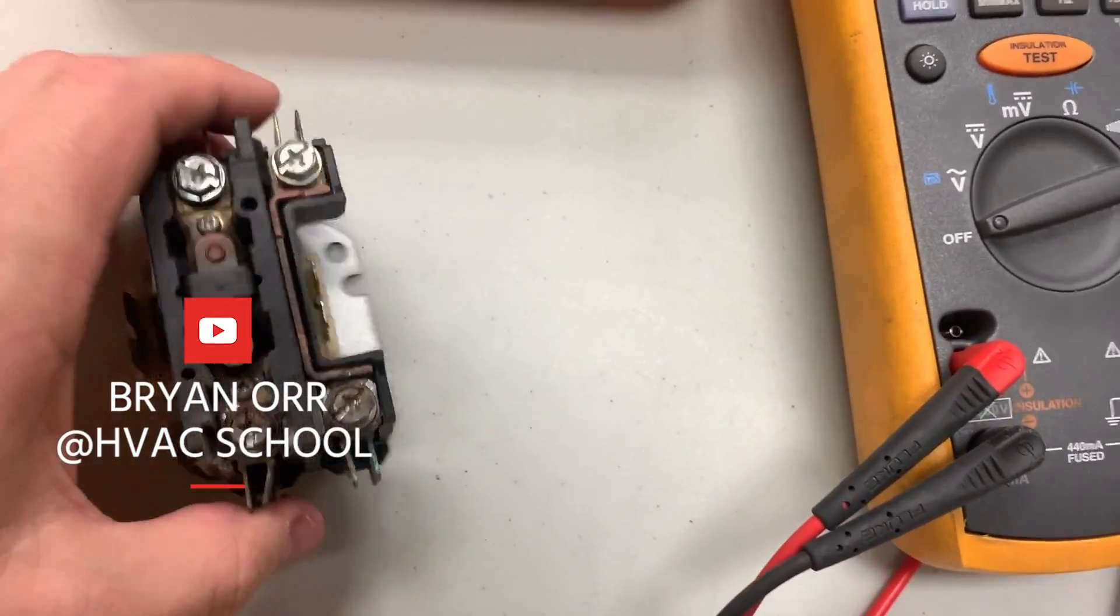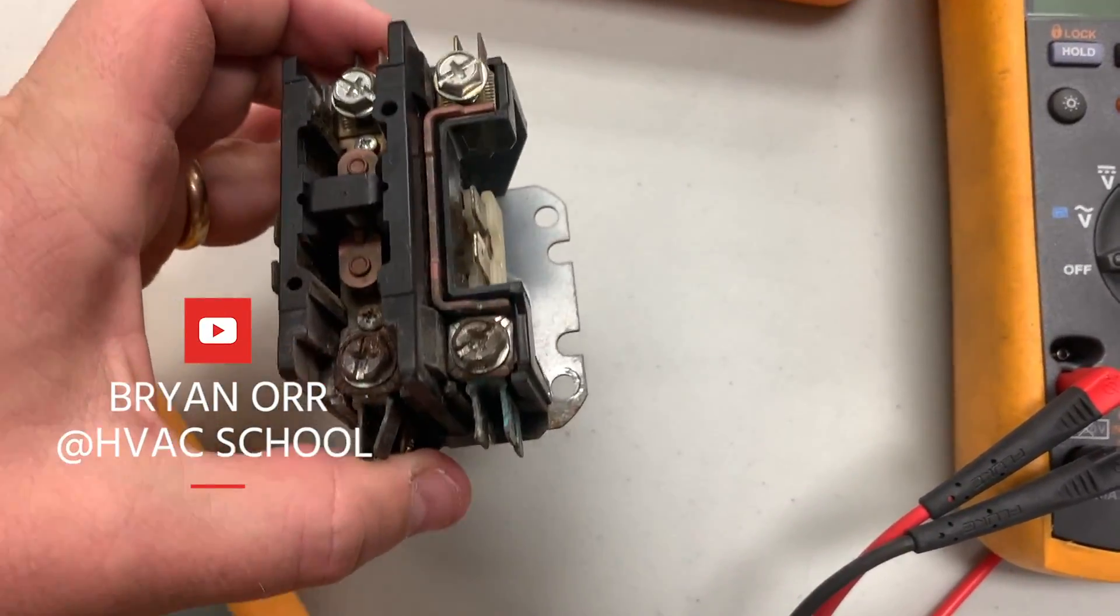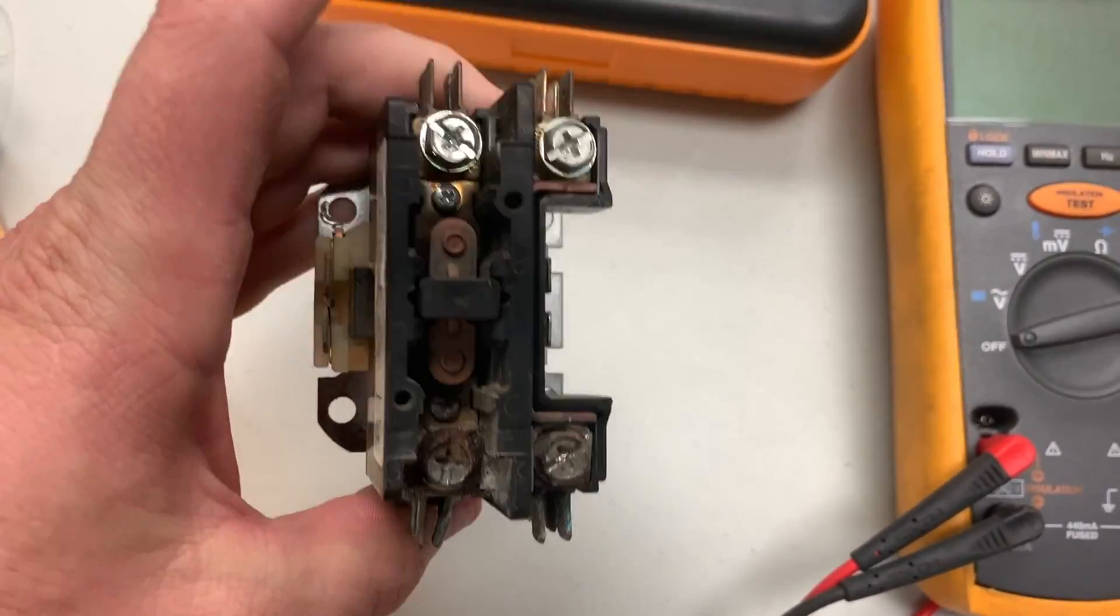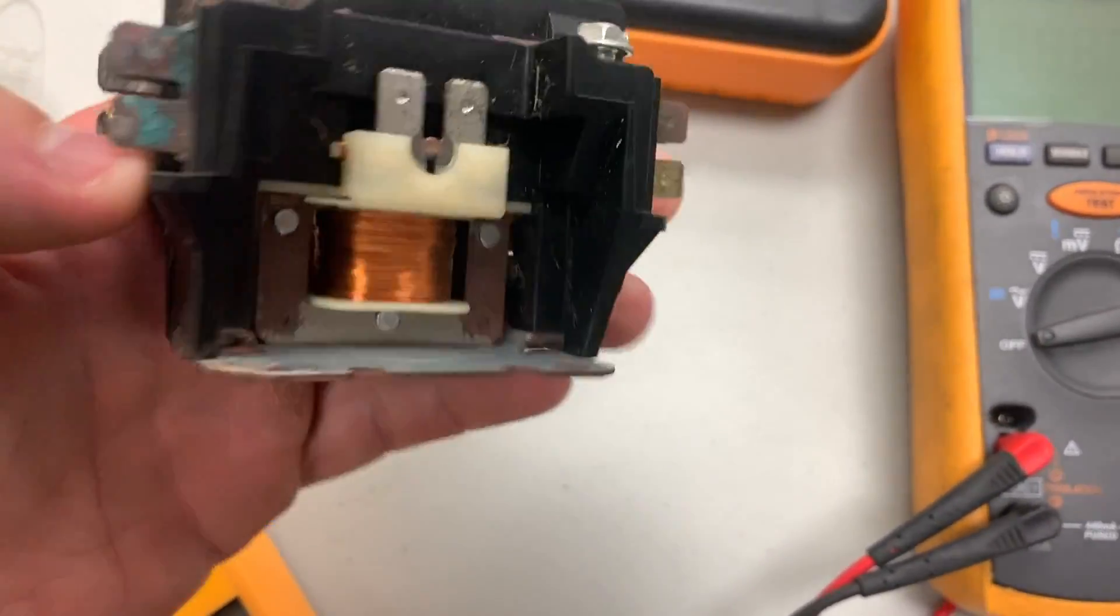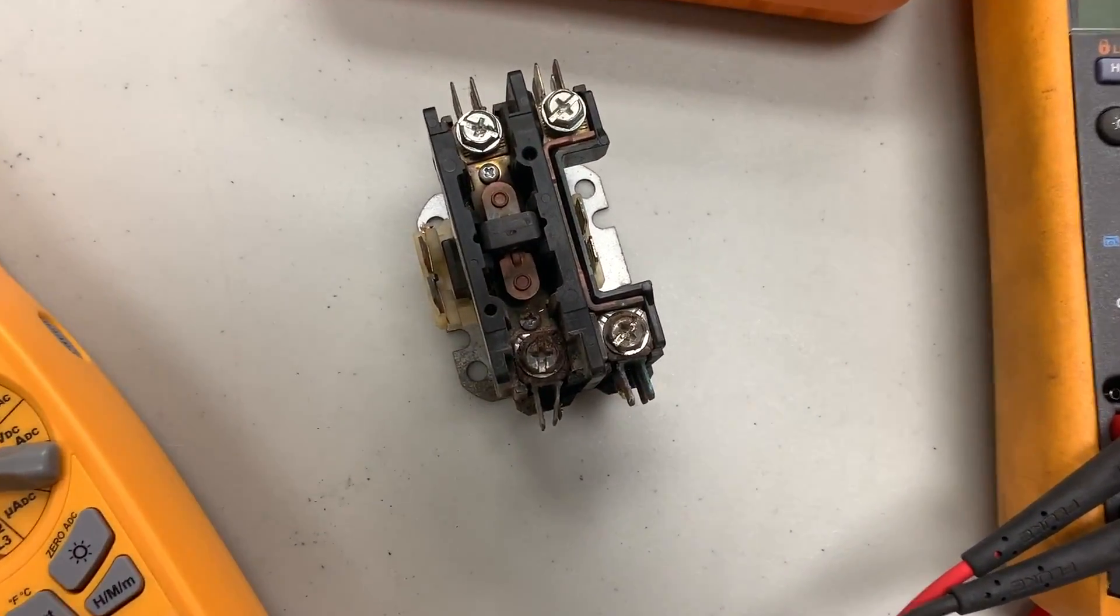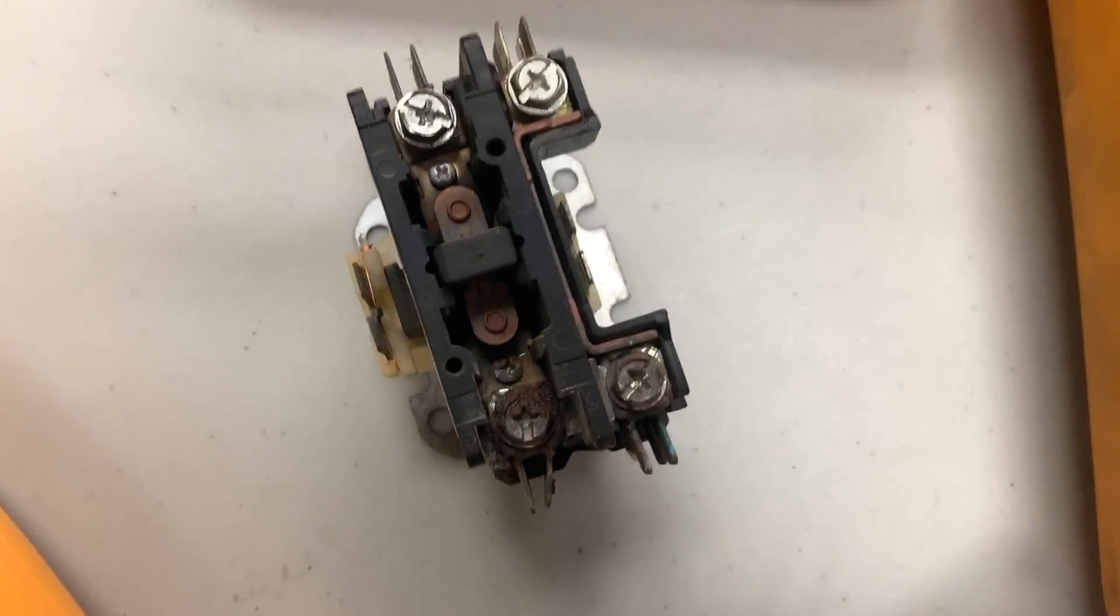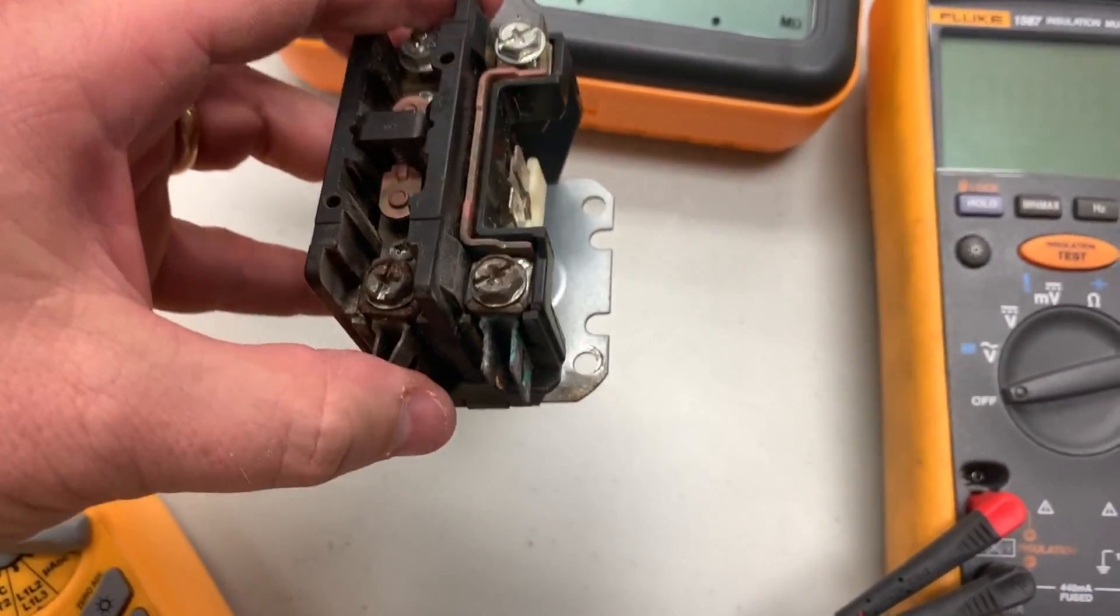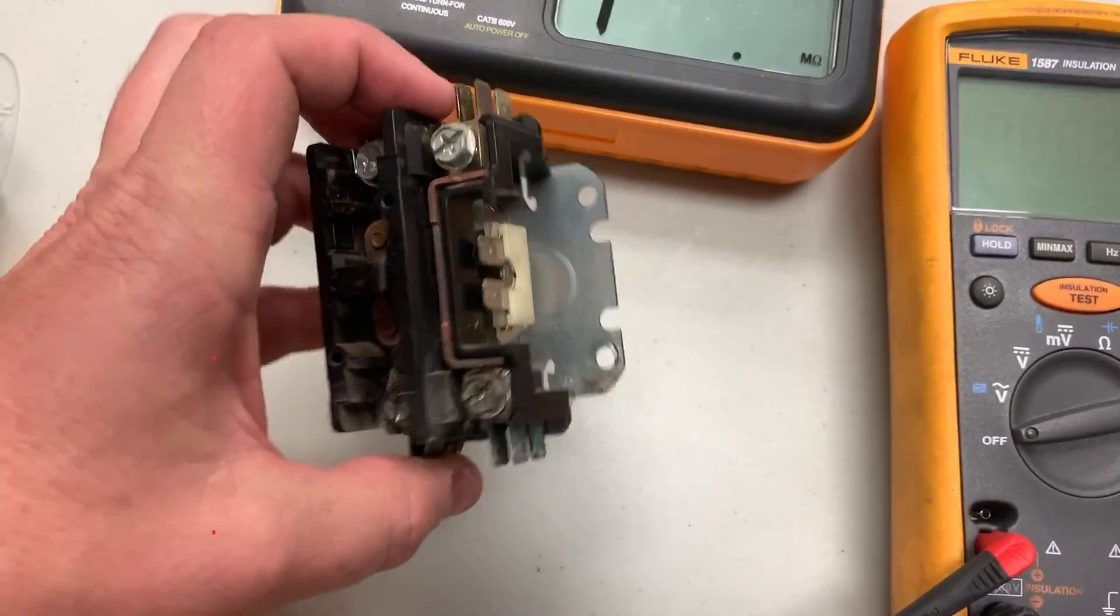Alright, so we're going to show you a really weird problem we had with a contactor that was intermittently tripping a breaker. I know you're going to say that's not what was causing it, and we would have agreed, but eventually we sourced the problem to the contactor. We're going to show you how hard this thing was to diagnose, then we'll try to pull it apart and see what's actually going on inside. I've got Eric here with me.